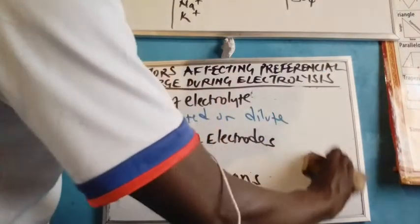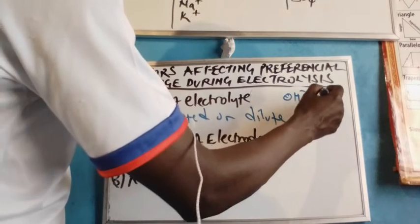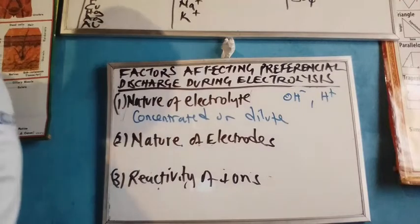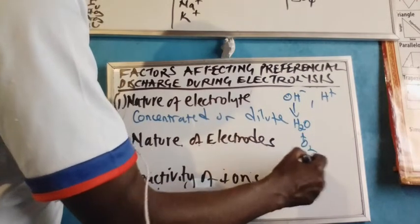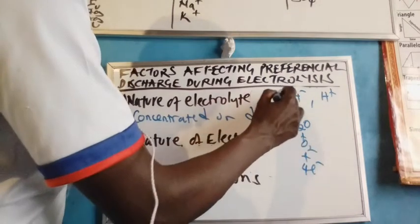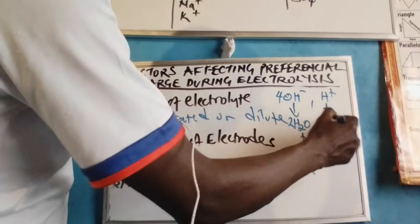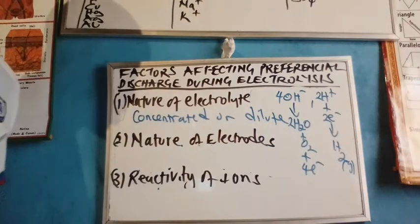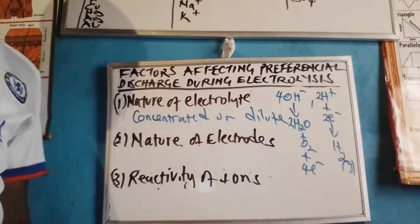However, should the electrolyte be dilute, which means the presence of water, then the ions present predominantly are those of water, namely hydroxide and hydrogen ions. During the electrolysis of a dilute solution, the hydroxyl ions are exclusively the discharged ions at the anode, readily forming oxygen gas in the oxidation process. At the cathode, the exclusively reduced species is the hydrogen ions, which forms hydrogen gas. So during electrolysis of a dilute solution, we expect to see formation of oxygen gas at the anode and hydrogen gas at the cathode.